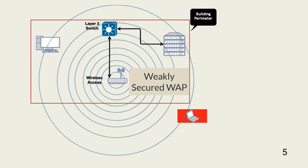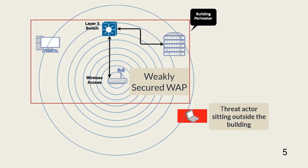This graphic shows a common wireless network configuration in which security was not necessarily a consideration in the design phase. Note that an attacker can gain access to a common area of the organization or simply sit in the parking lot to access network wireless transmissions or signals.